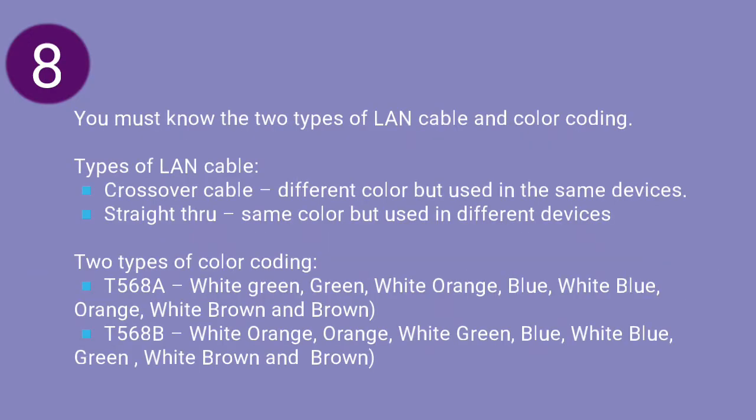Number 8: You must know the two types of LAN cable and color coding. The two types of LAN cable are crossover and straight-through cable. A crossover cable uses a different color order and is used between the same types of devices, while straight-through uses the same color order and is used between different types of devices. The two types of color coding are T568A and T568B.